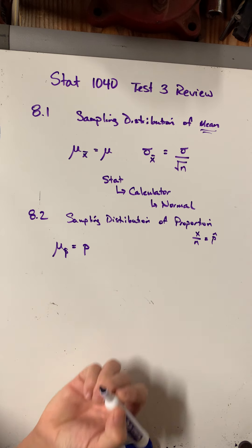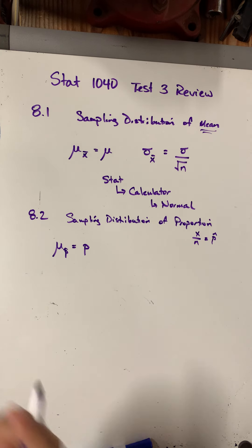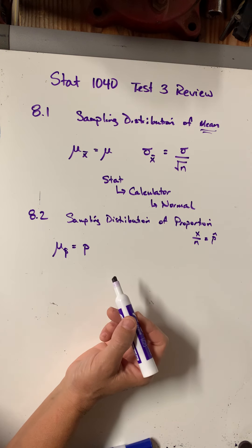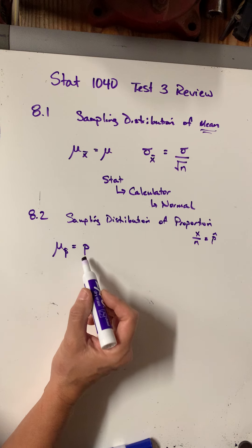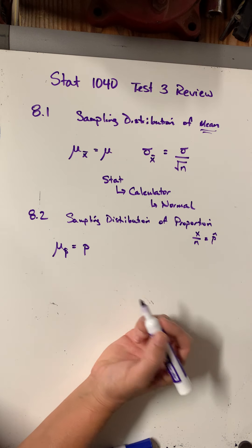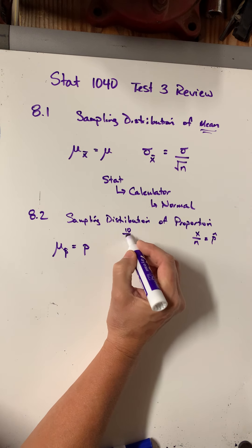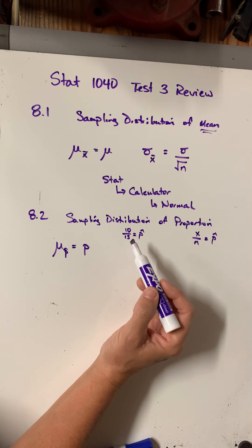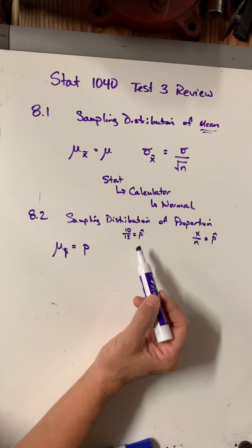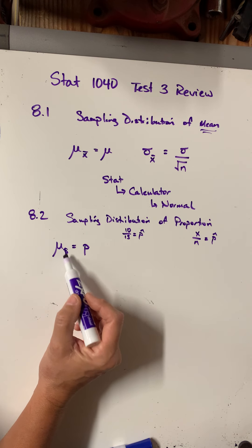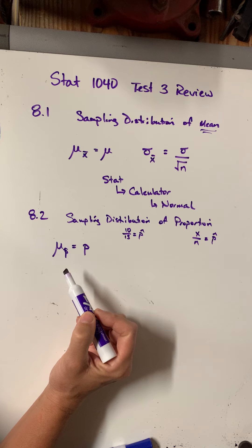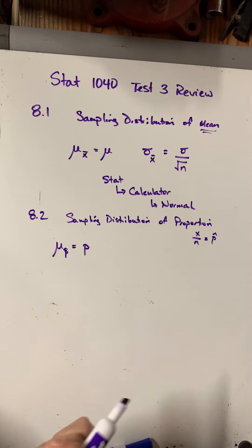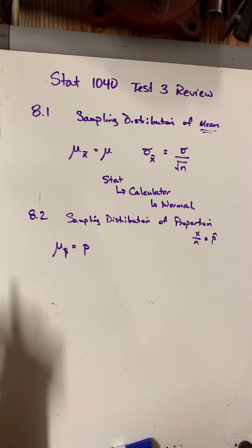The formula for the mean of the sampling proportion is just the proportion of the original population that they gave you. They could give it as a percentage, a decimal, or say something like 10 out of 15 people, so you'd figure out the proportion. If you see wording like a certain amount out of a certain amount, or they're using p's and p-hats, then you know you're in a proportion. It's important to identify that so you know what formulas to use.